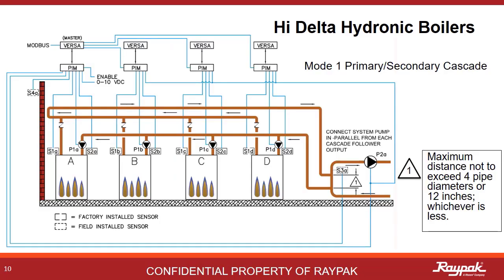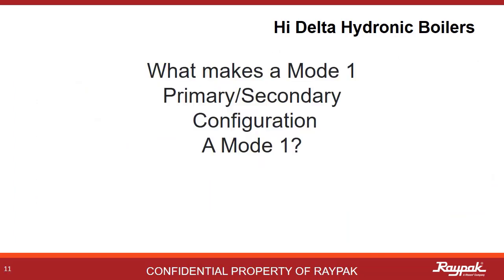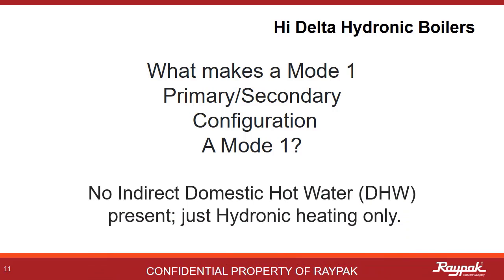This is the Mode 1 cascade system. Boiler A on the left is the master boiler, and boilers B, C, and D are the followers. All of the same decoupler concepts apply, only now they apply to the whole cascade. An important part of plumbing boilers in cascade is to use reverse return logic — the first boiler out to the loop is the last boiler to receive water back from the loop. What makes a Mode 1 primary-secondary a Mode 1 is not what's there, but what's not there: there's no indirect domestic hot water system present. It's just a straight-up hydronic heater.